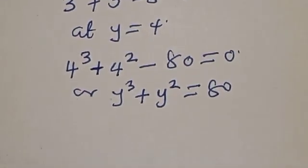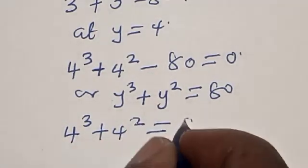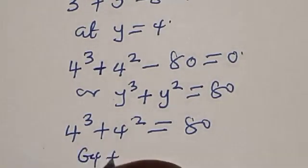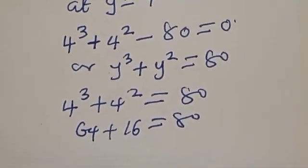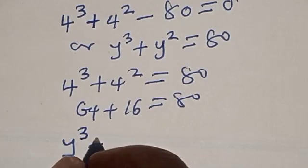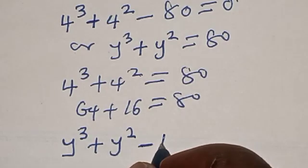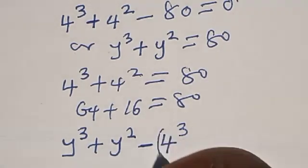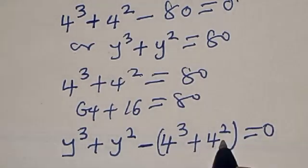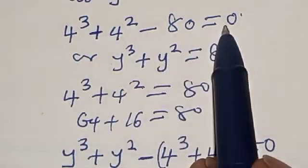We want to verify: y cubed plus y squared equals 80. We have 4 cubed plus 4 squared is equal to 80, because 4 cubed is 64 plus 4 squared which is 16, and that equals 80. So our equation becomes y cubed plus y squared minus (4 cubed plus 4 squared) is equal to zero, because 4 cubed plus 4 squared equals 80.